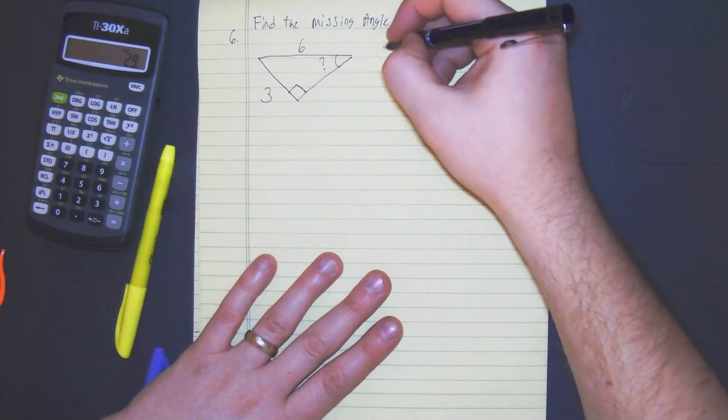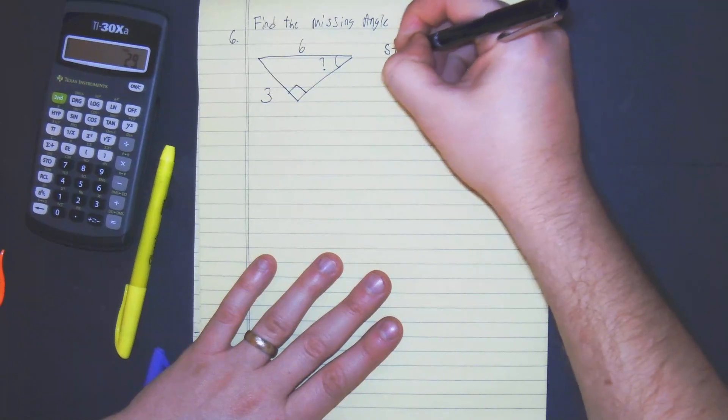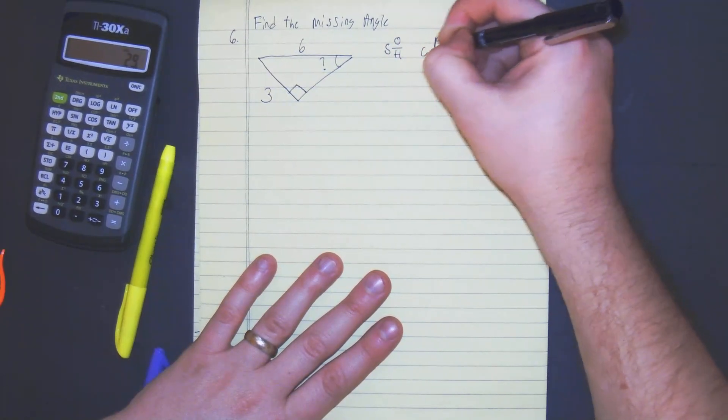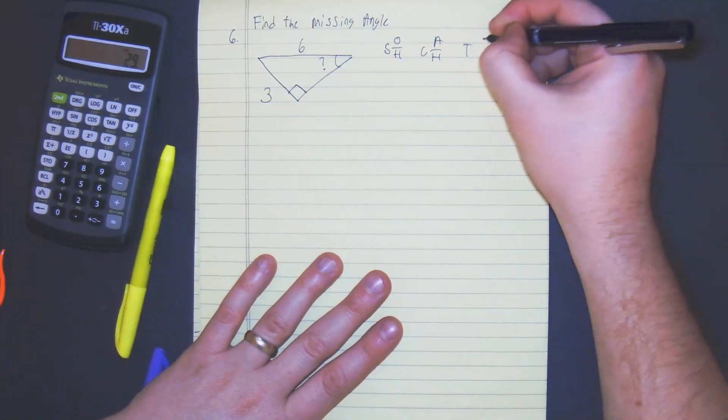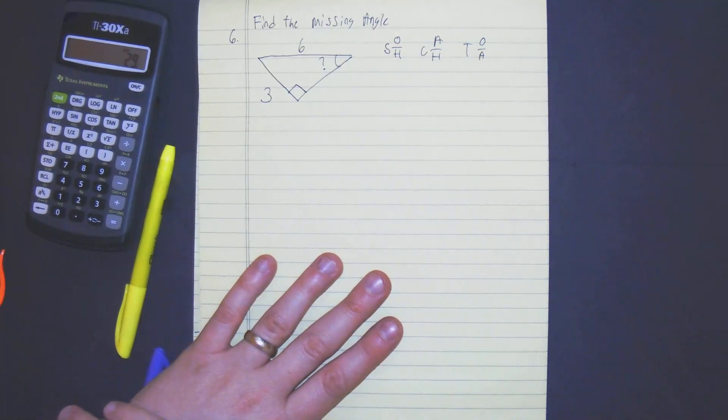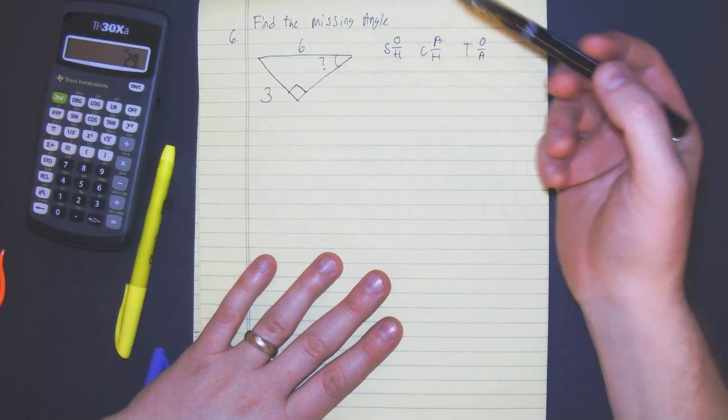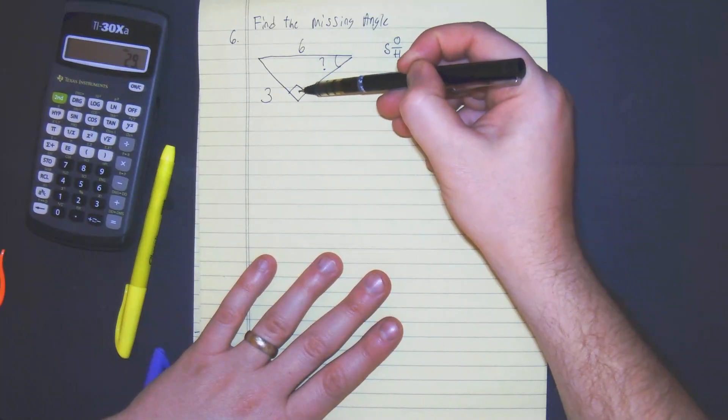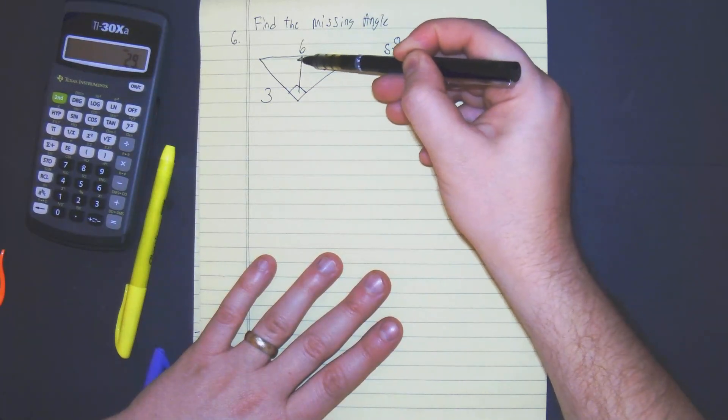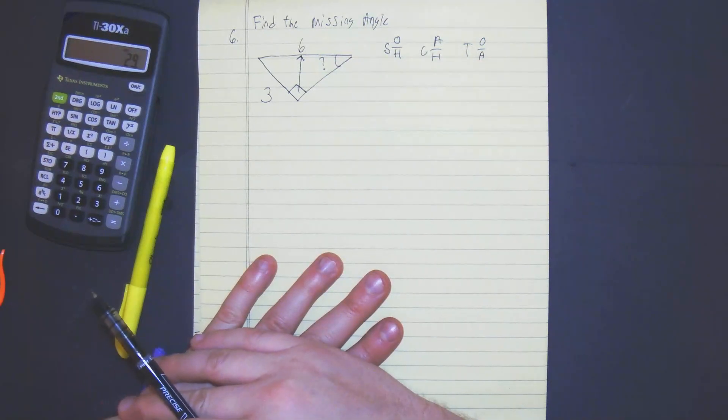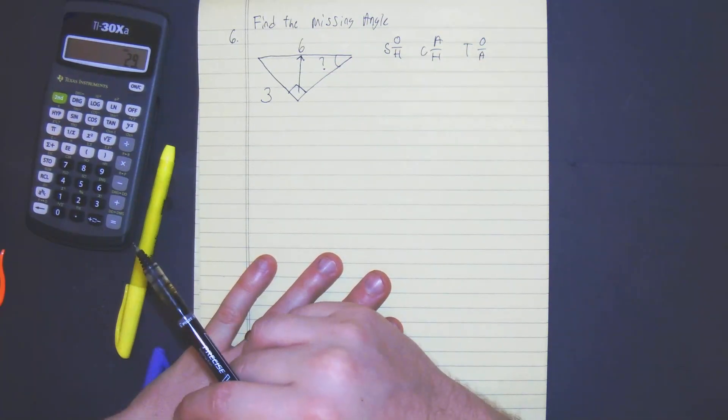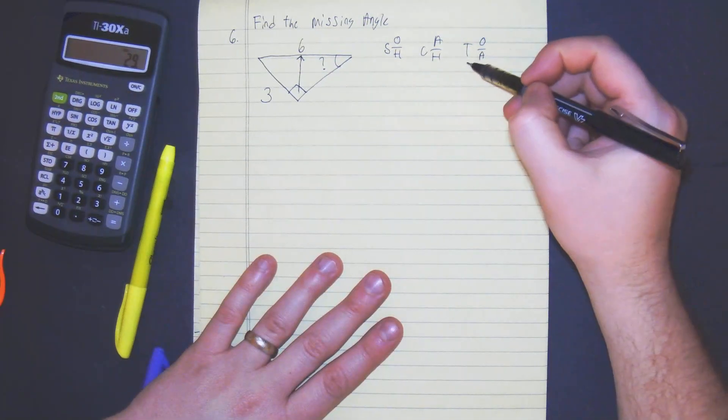We first need to write SOHCAHTOA or some old hippie got another hippie tripping over apples. So the first thing I look for is a hypotenuse. So I put my pen on the right angle and draw across. Right here I notice I have a six for the hypotenuse. So I know I'm not going to use tangent.